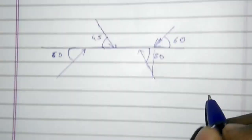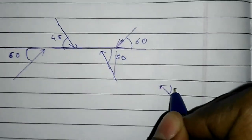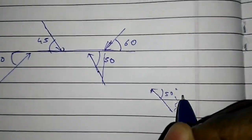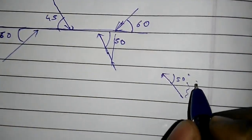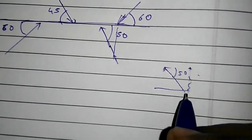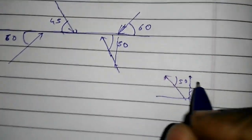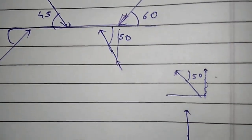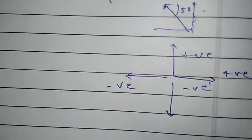After resolving, this force making an angle will have two components — one vertical, one horizontal. The convention is: forces going upward are positive and going downward are negative in the vertical. Forces going towards the right are positive and forces going towards the left are negative in the horizontal.